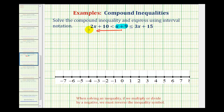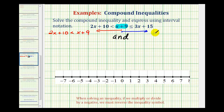since there's a variable on both sides of this inequality, we'll just write it as it is. So in red we'll have two x plus ten is less than x plus nine. And in blue, from left to right, we would have x plus nine is less than or equal to three x plus fifteen.